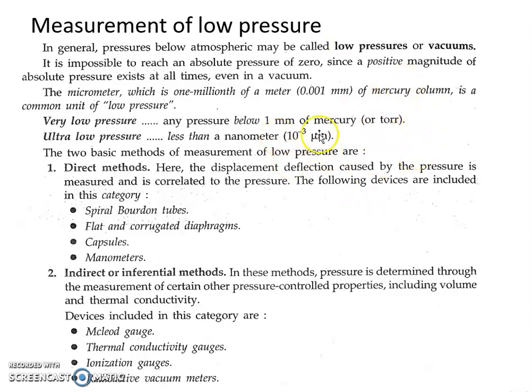There are two types of low pressures: very low pressure and ultra low pressure. Any pressure below one mm of mercury is called very low pressure, and pressure less than a nanometer is called ultra low pressure.